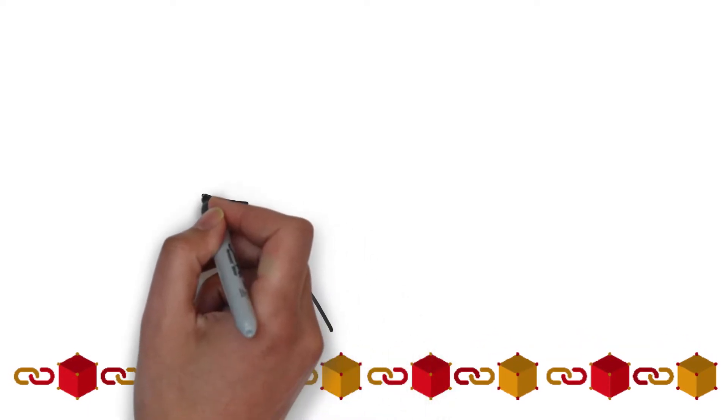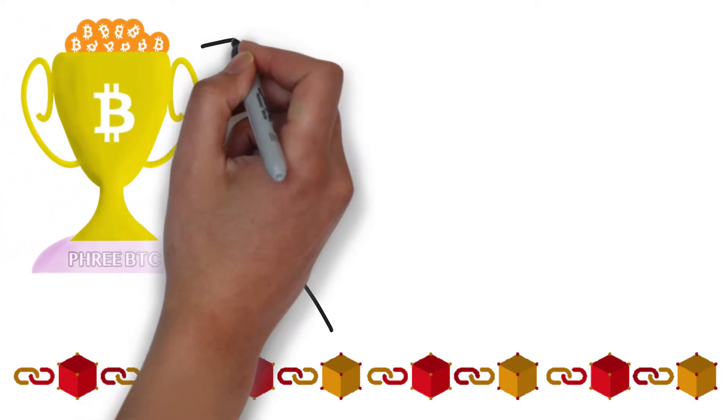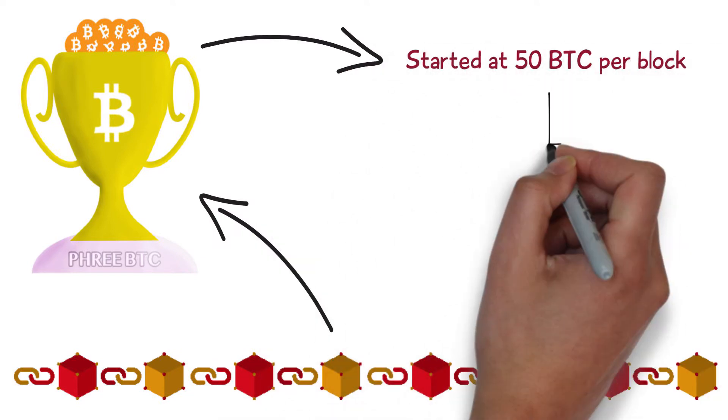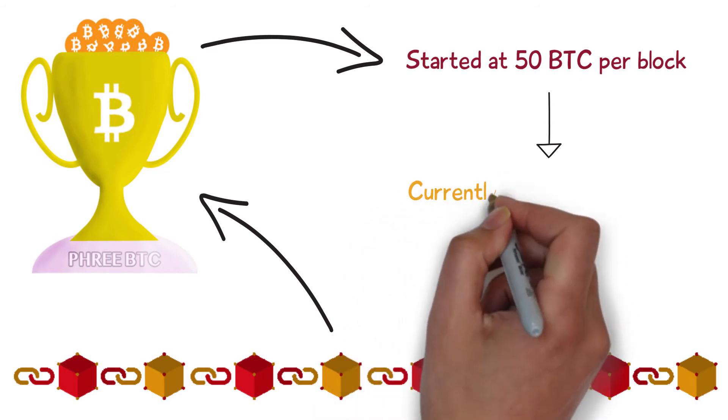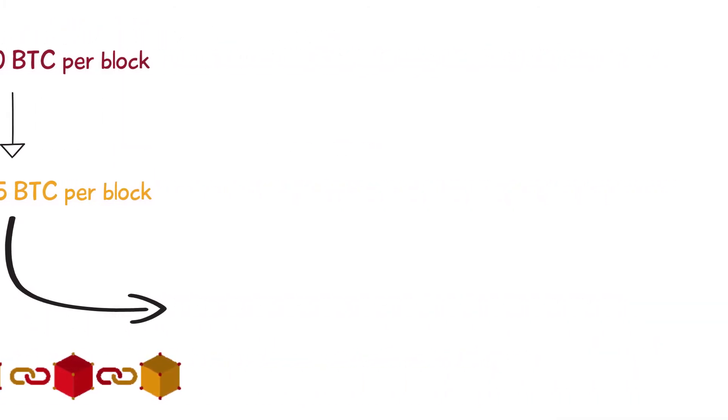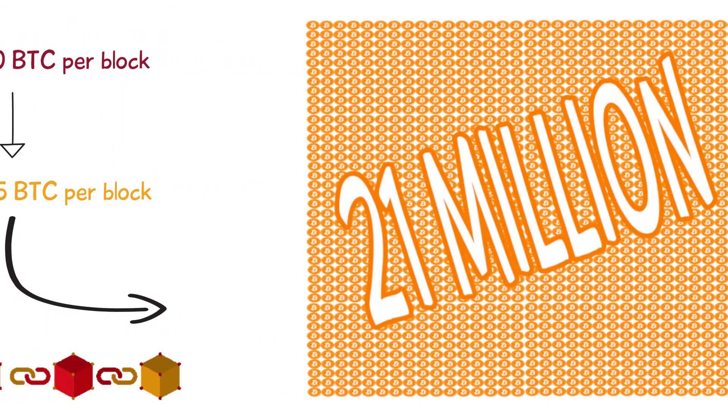Oh didn't I mention? The creator of a block is rewarded with newly minted coins. For the Bitcoin network the amount of coins started out at 50 per block and is halved every 4 years, with a current reward of 12 and a half coins per block. Following this trend the last Bitcoin will be minted in 2140 and result in a maximum market supply of 21 million coins.